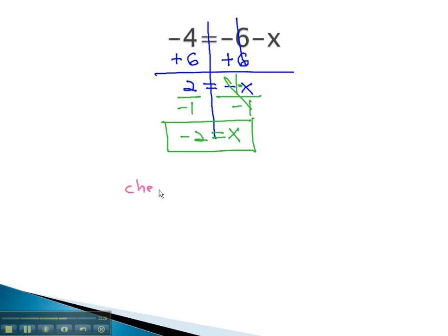Let's check it to make sure that's the correct answer. The way we can check it is take that number and replace the x with it. So we want to know, is negative 4 really equal to negative 6 minus x or minus negative 2? Well, we don't like to subtract with negatives, so we'll add the opposite.